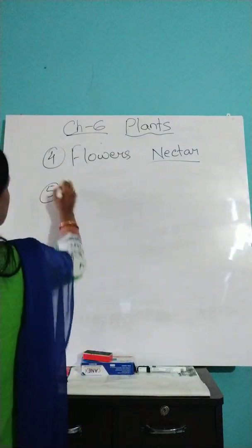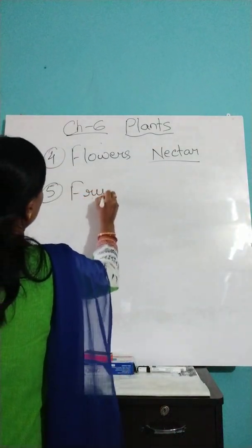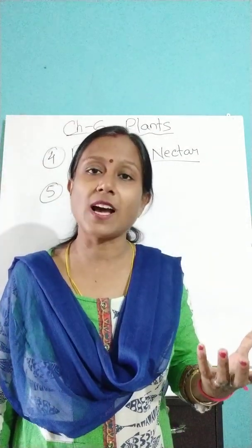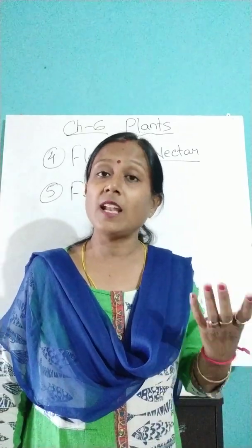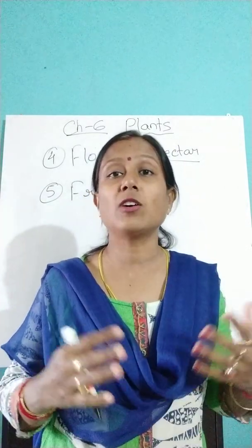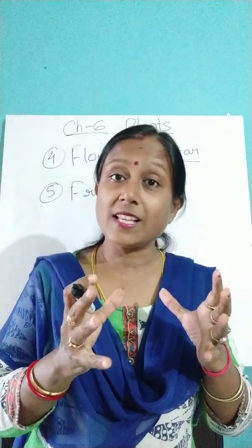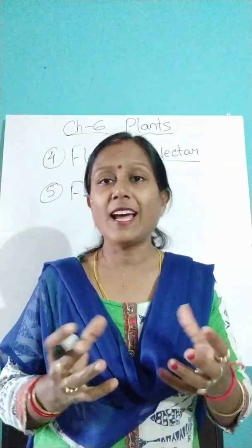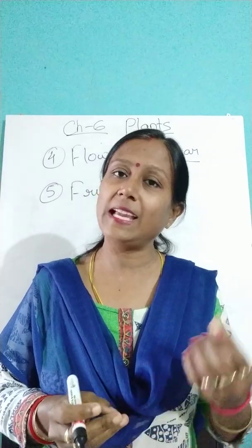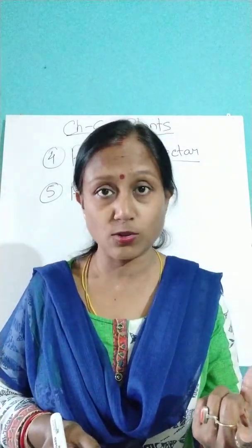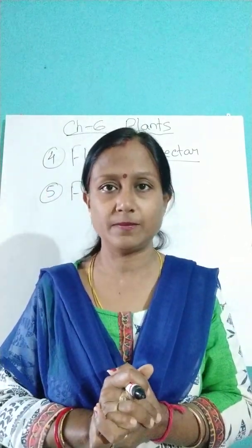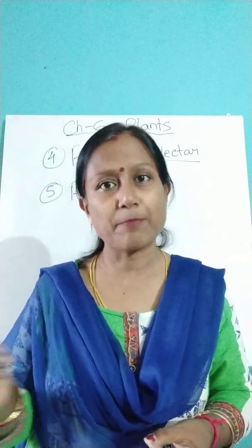From flowers, fruits are produced. Fruits are also of different shapes and sizes, and they are very fleshy. Some fruits bear a single seed, such as mango, while some fruits bear many seeds in them, such as apple and papaya.